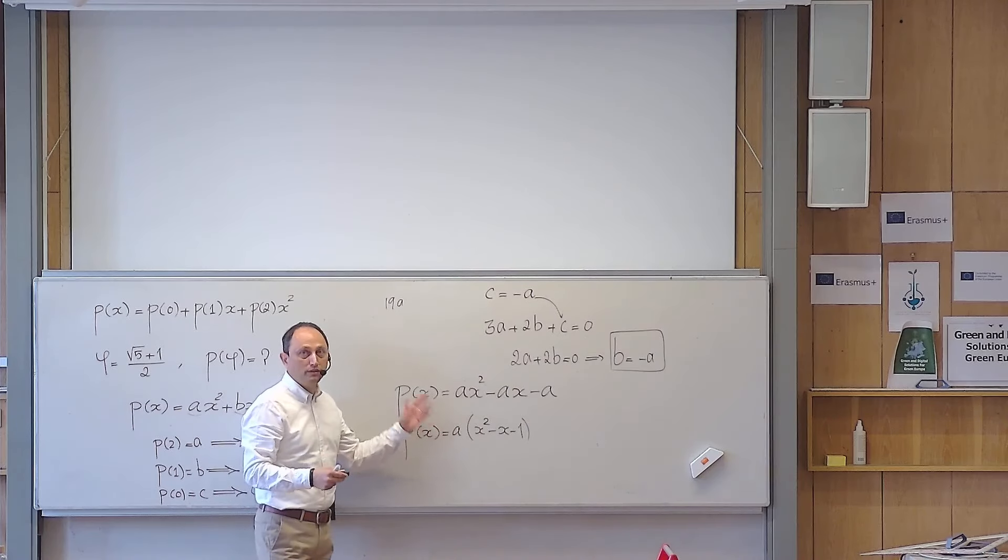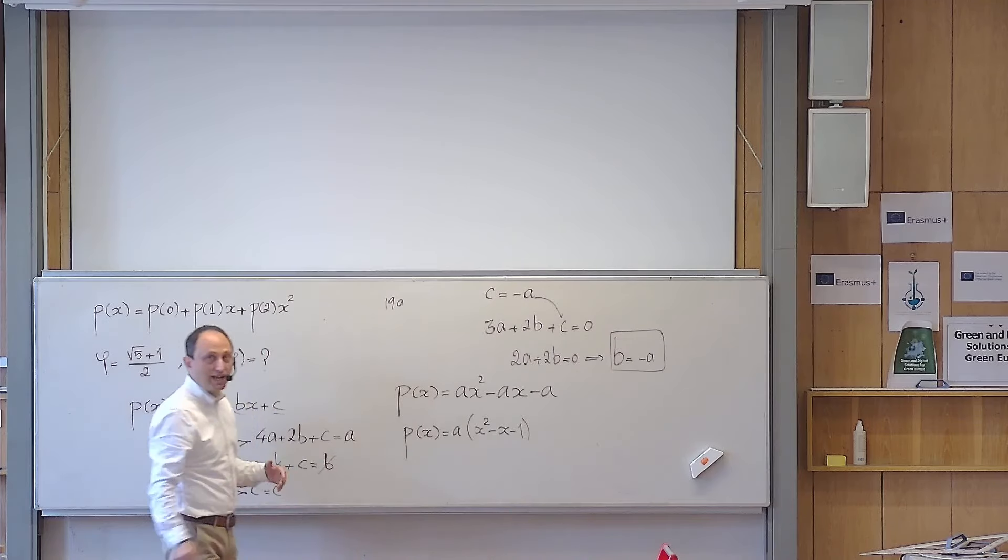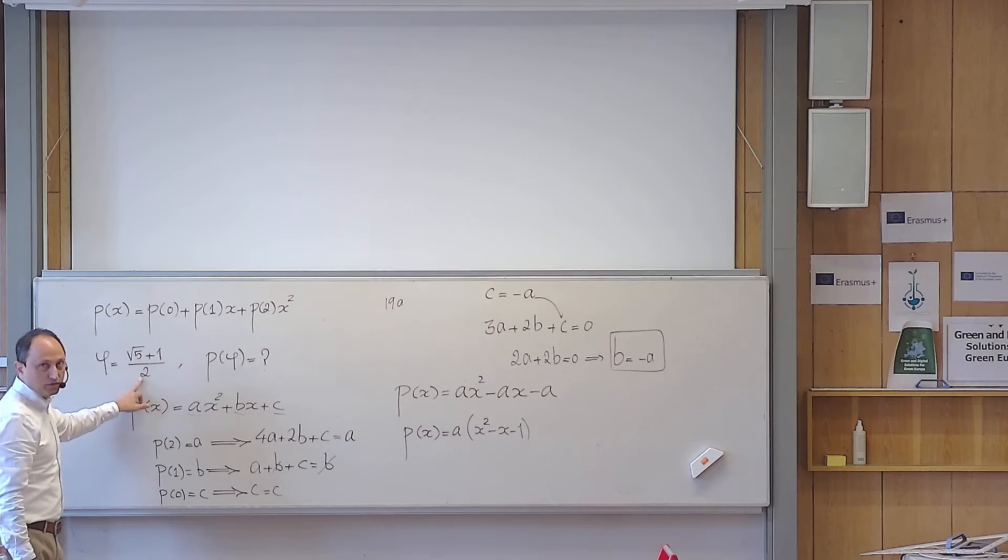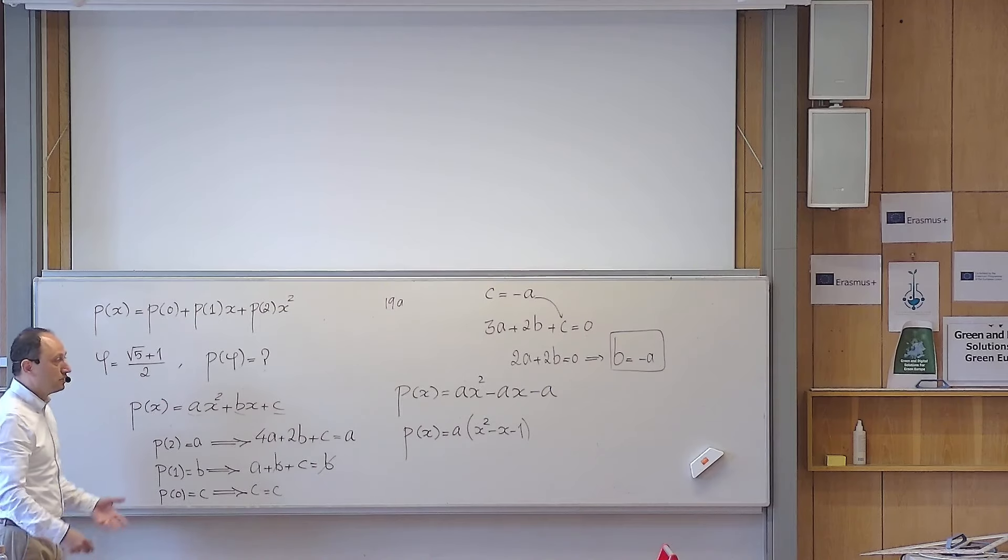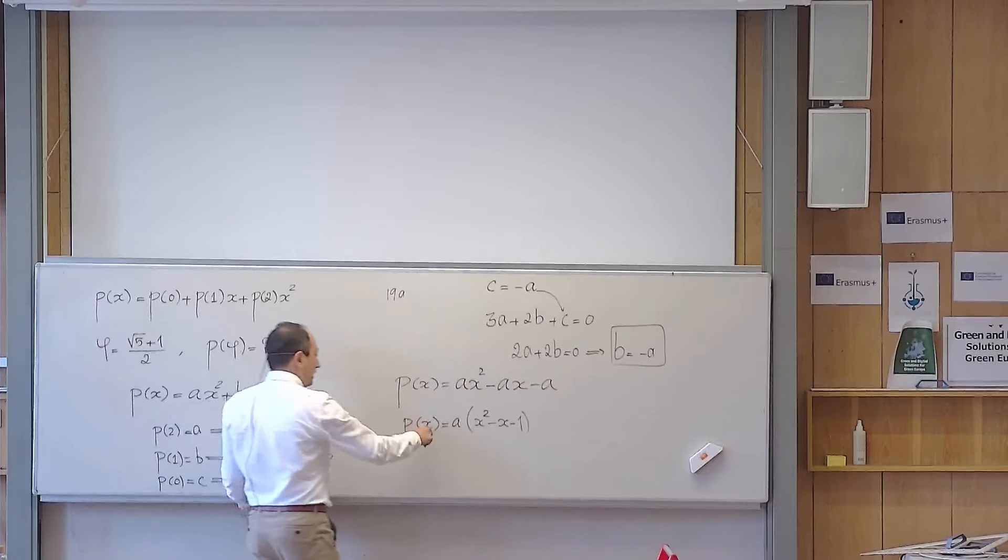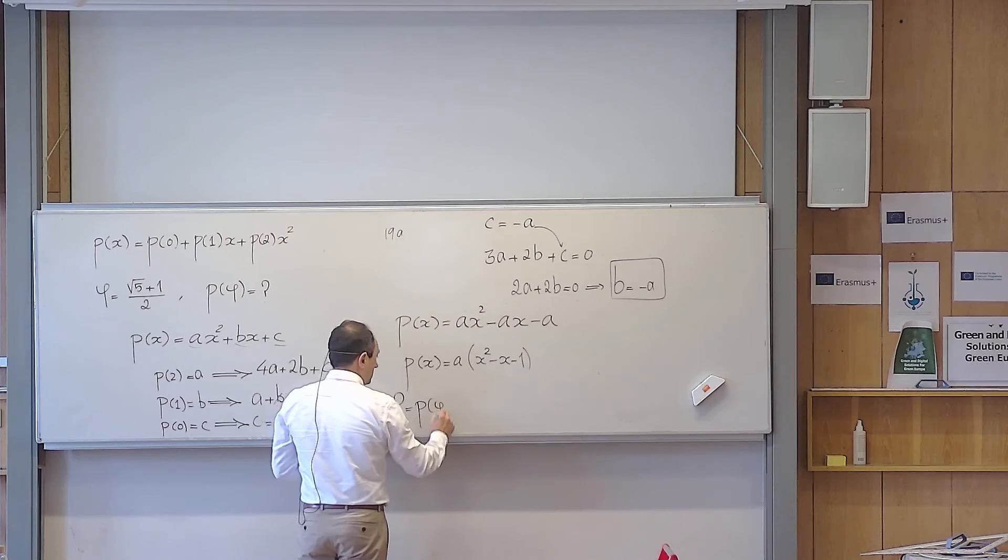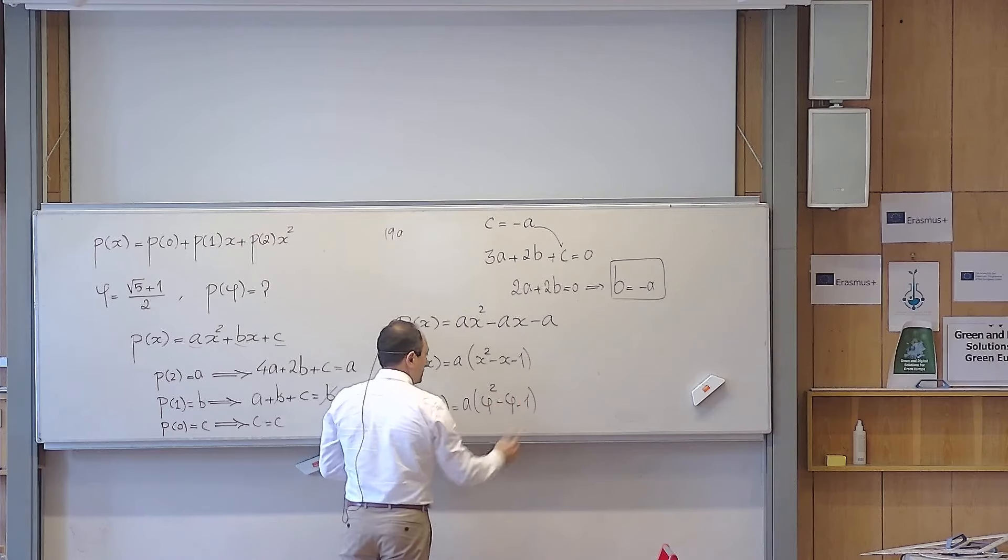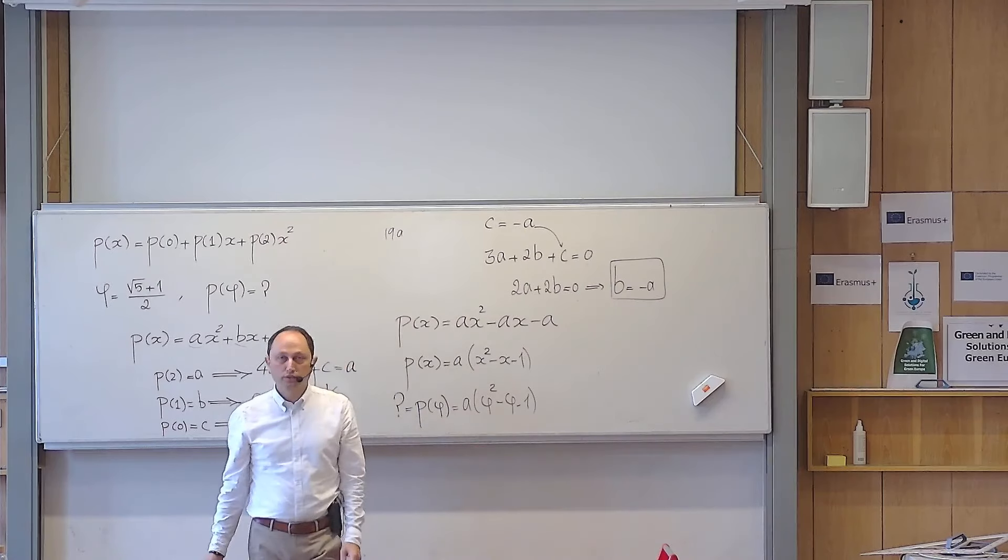And this, you might think, will affect the calculation. Yes, it would affect the calculations if they have asked p of something except this golden ratio or square root of 5 minus 1 over 2. These are the only two numbers, probably, that you can calculate this exactly because if you replace phi there, my goal is to calculate p of phi, then it becomes a times phi squared minus phi minus 1. But this combination is very famous for the golden ratio. This is 0.